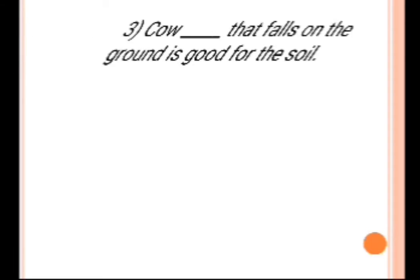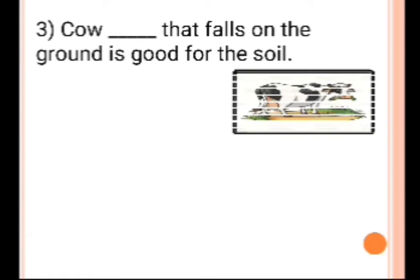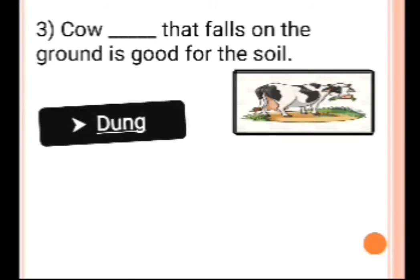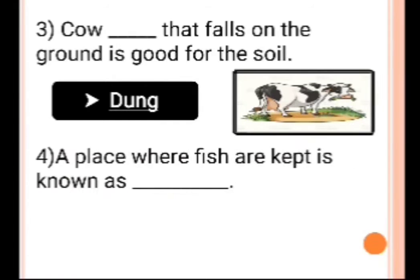Number 3: Cow dash that falls on the ground is good for the soil. Answer is dung. Cow dung that falls on the ground is good for soil.